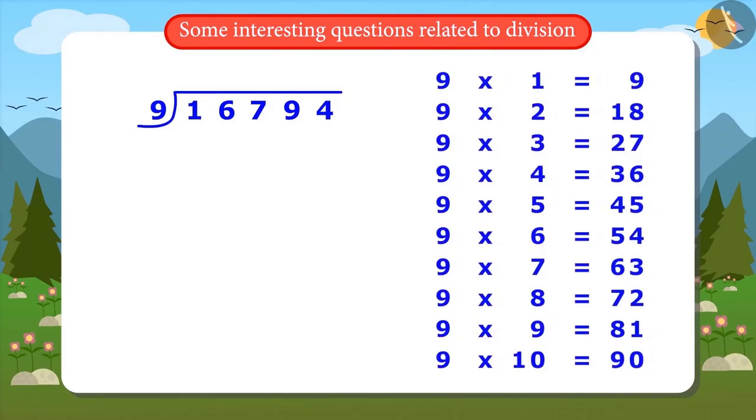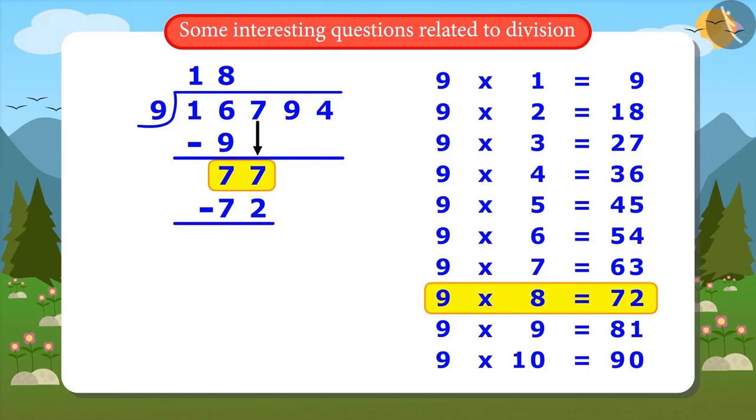I will write 16,794 and 9 in this way to divide this. Now I will start dividing by 9. The first digit is 1. That will not be divided. So I will divide 16 by 9. 9 ones are 9. The remainder left is 7.